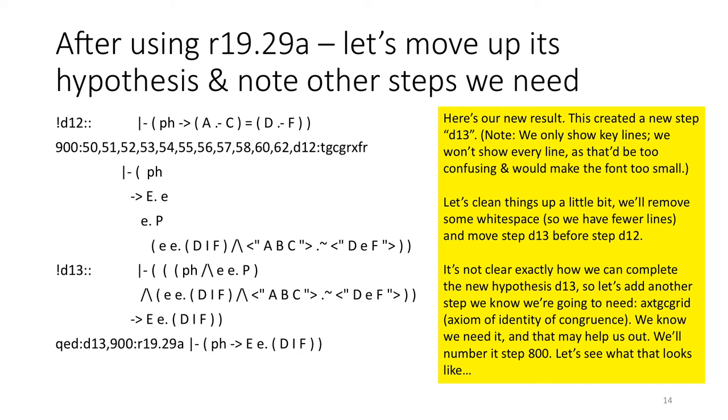So after using R19.29A, let's move up its hypothesis and note some other steps that we need. Here's our new result. This created a new step D13. Note that we're only showing key lines. We're not going to show every line as that may be too confusing. Let's clean things up a bit. We'll move step D13 before D12. It's not clear exactly how we can complete this new hypothesis D13, so let's add another step we know we're going to need eventually.